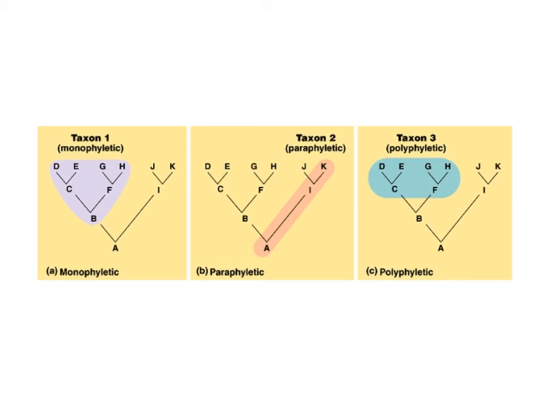A paraphyletic group contains the most common ancestor but not all of its descendants. As can be seen, species J has been excluded from the highlighted group of A, I, and K.